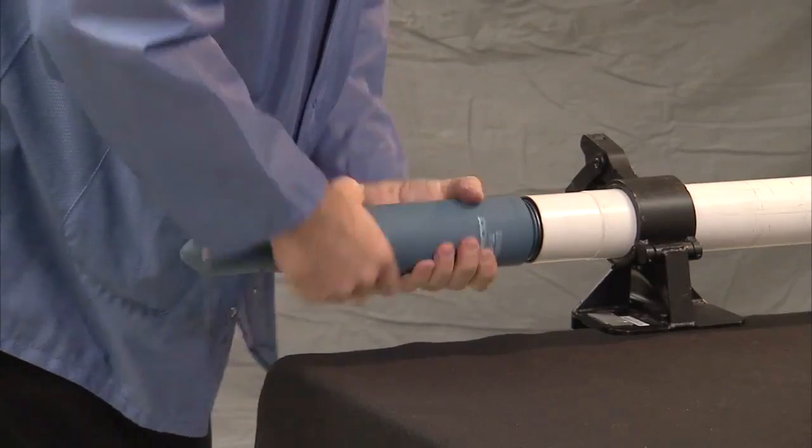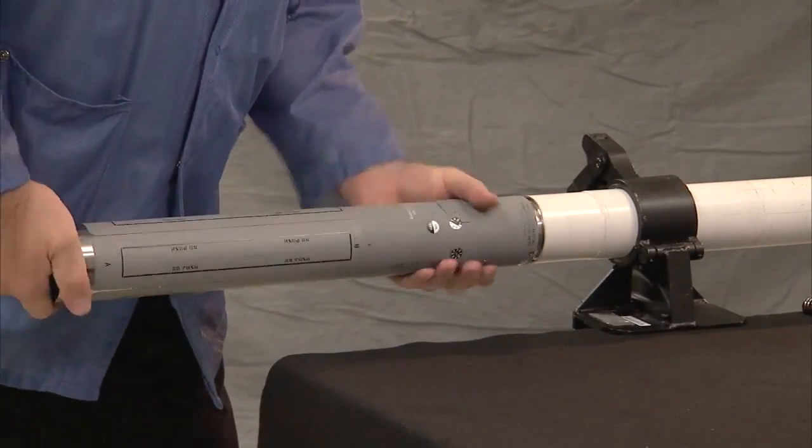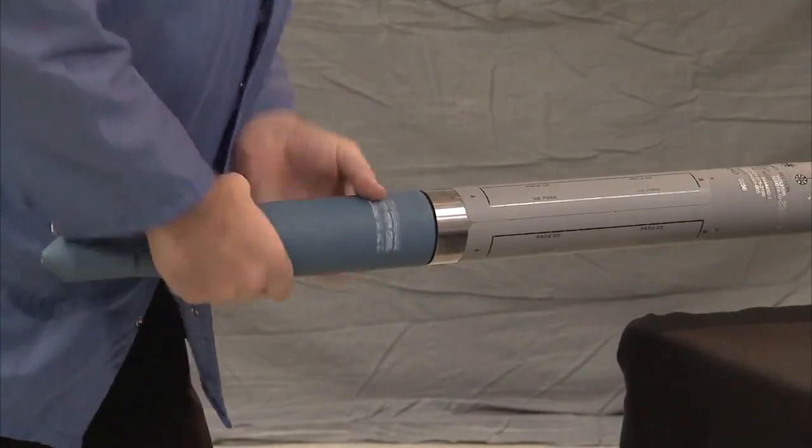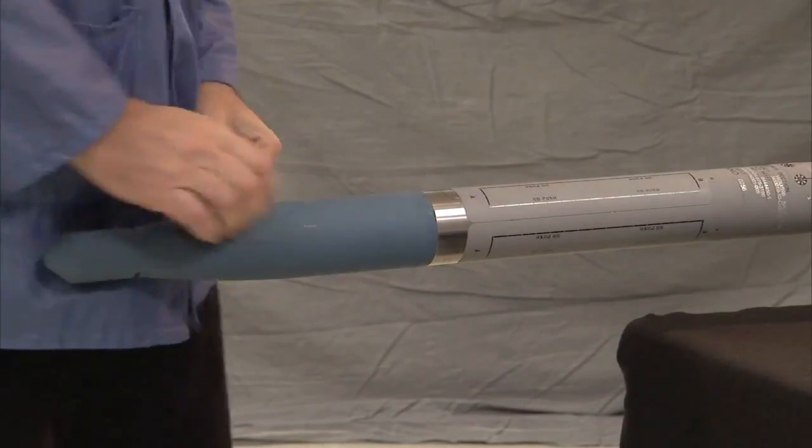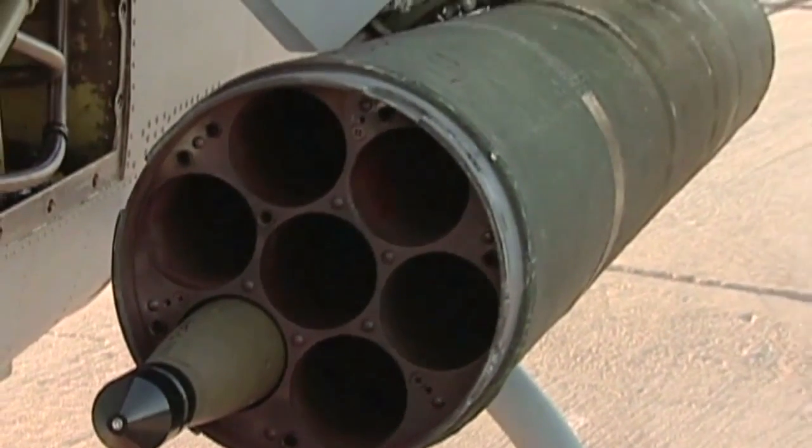APKWS can easily convert an unguided hydro rocket into a guided rocket without altering the effectiveness of the warhead and fuse. It is a plug-and-play, point-and-shoot system that requires no modification to the aircraft or launcher.